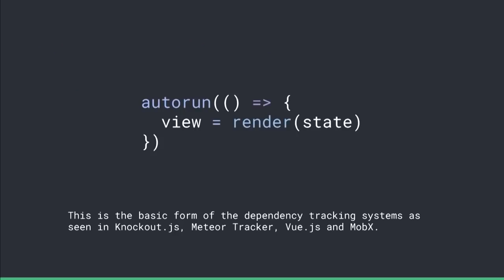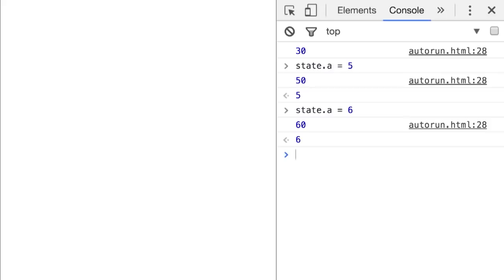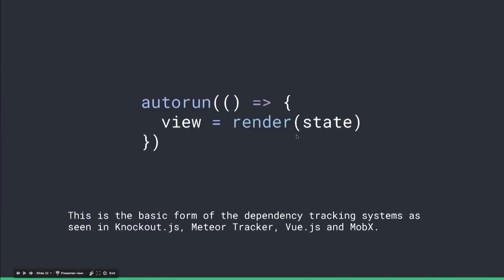The next function we implement is called autoRun, which is basically a modified version of the onStateChanged magic function. It takes the update function and turns it into a job — all the job does is wrap the update function and set itself as the current active job when it's being executed. Because the active job is set before calling the update, when the update function accesses the getter, the job will be pushed into the subscriber array. So when we pass our render function into autoRun and the render function accesses state.a during rendering, autoRun will track that dependency. And whenever state.a changes later, this function will be run again. This is actually the foundation of the dependency tracking system seen in Knockout, Meteor's Tracker used in Meteor Blaze, Vue.js, and also MobX.